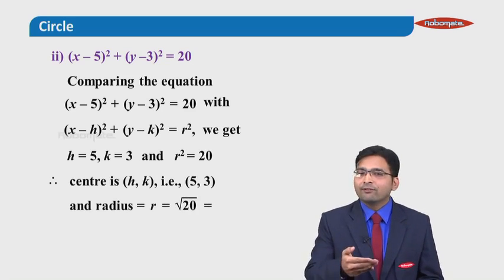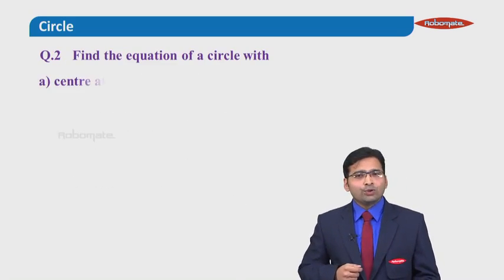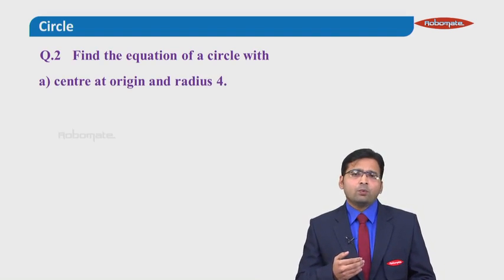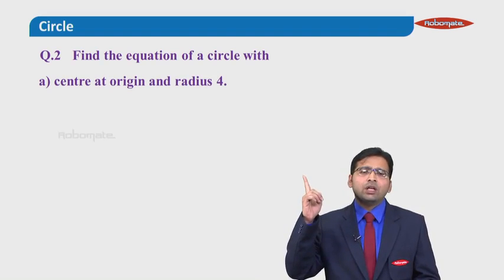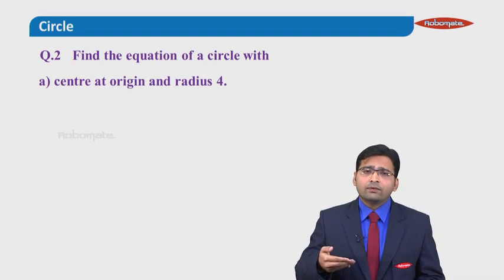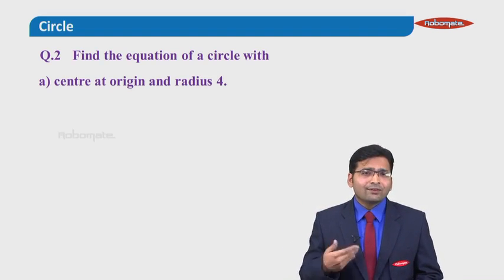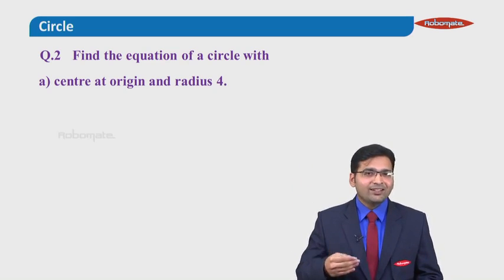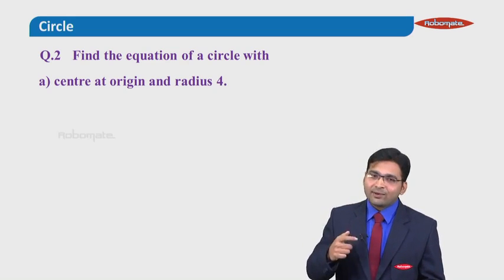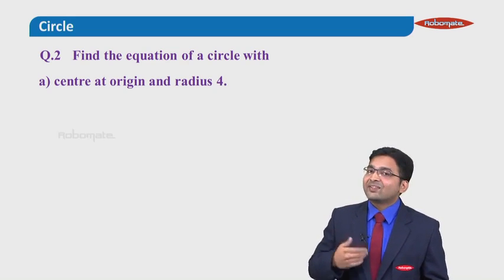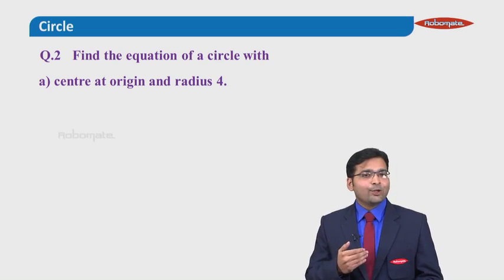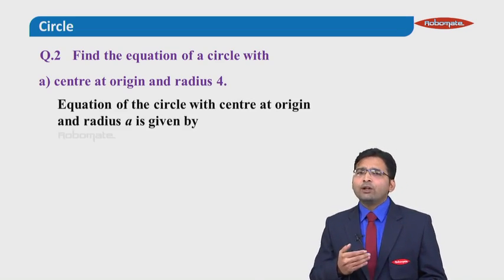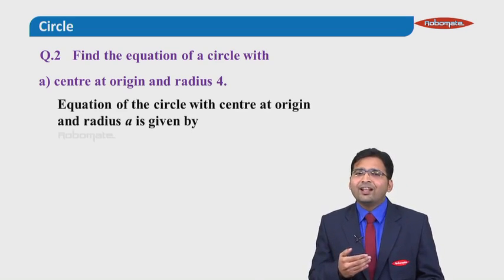Question 2 says: find the equation of a circle with center at origin and radius 5. Since the center is at the origin, this is a Type 1 — a standard circle problem.